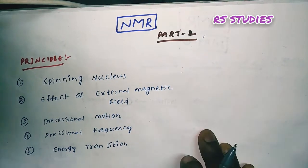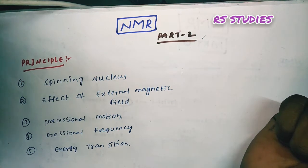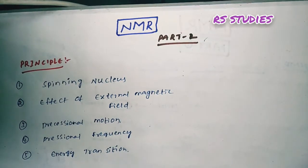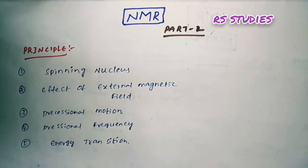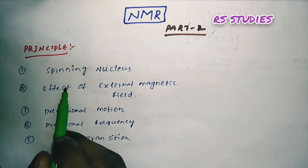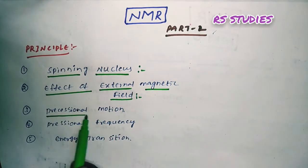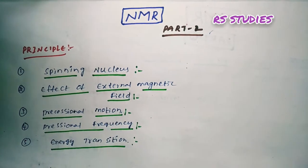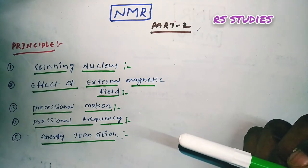NMR is called Nuclear Magnetic Resonance. The NMR Principle has five parts: first is Spinning Nucleus, second is Effect of External Magnetic Field, third is Precessional Motion, fourth is Precessional Frequency, and fifth is Energy Transition.